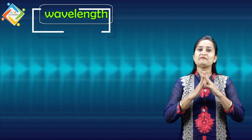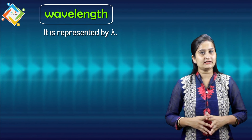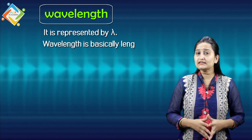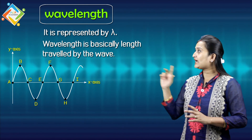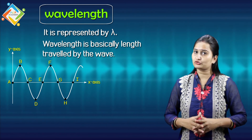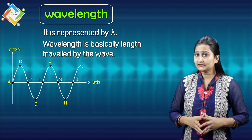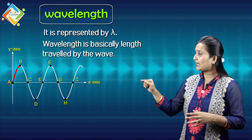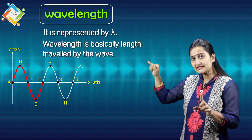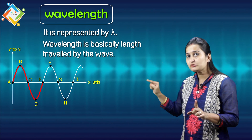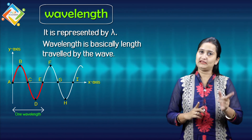Now let's start with the first characteristic of the sound wave — that is called wavelength. Wavelength is basically represented by the symbol lambda (λ). The definition is: wavelength is the length traveled by the wave. Referring to the diagram, the first wave starts from A and terminates at point E — so the distance the wave traveled from maximum to minimum is called one wavelength.